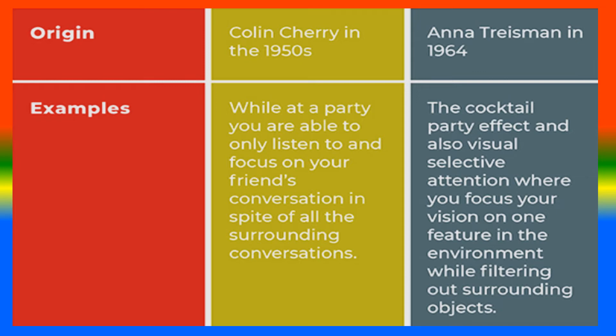Examples: for the cocktail party effect, while at a party you are able to only listen to and focus on your friend's conversation in spite of all the surrounding conversations. For selective attention, the cocktail party effect is one example, and also visual selective attention where you focus your vision on one feature in the environment while filtering out surrounding objects.